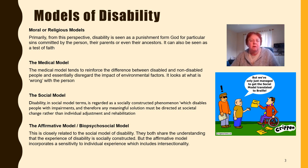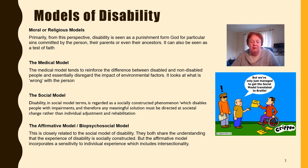Most universities in the UK actually look at the social model. Disability in social model terms is regarded as a socially constructed phenomenon which disables people with impairments. So any meaningful solution must be directed at changing society rather than individual adjustments and rehabilitation. This model developed in reaction to the limitations of the medical model and was inspired by activism of the 60s and 70s. But it's not without its critics, as some disabled people claim that they're not just disabled by their environment but they also have impairments which have an effect and can't be ignored.